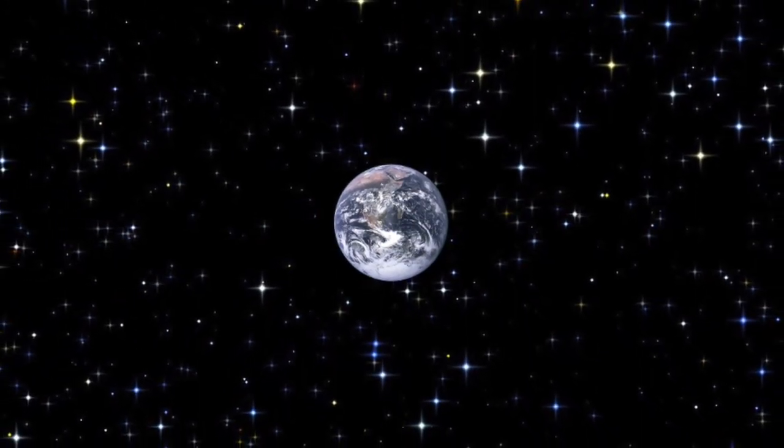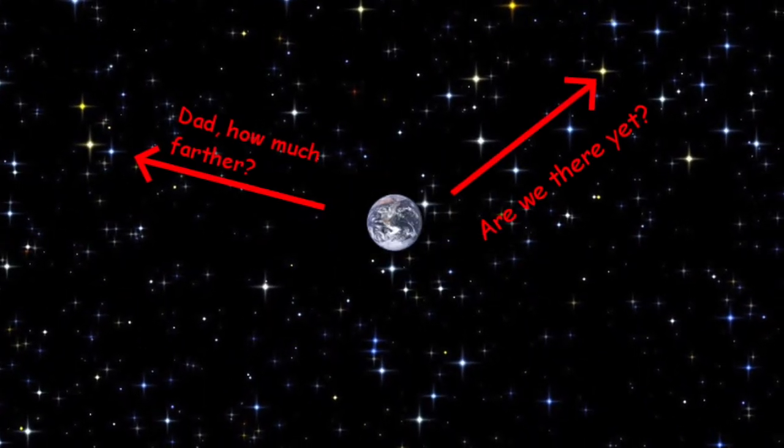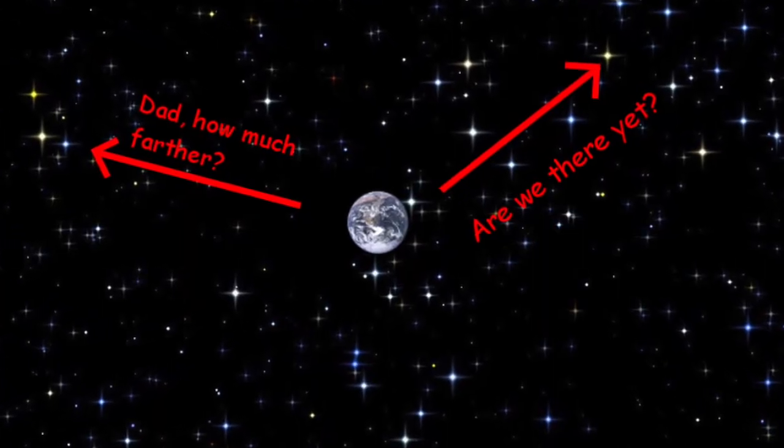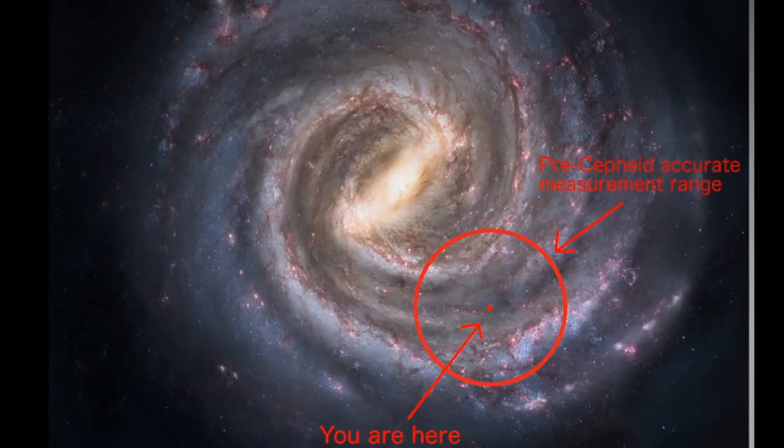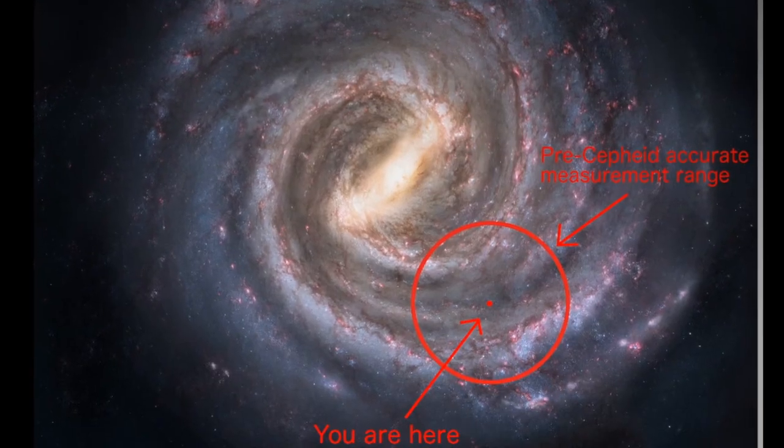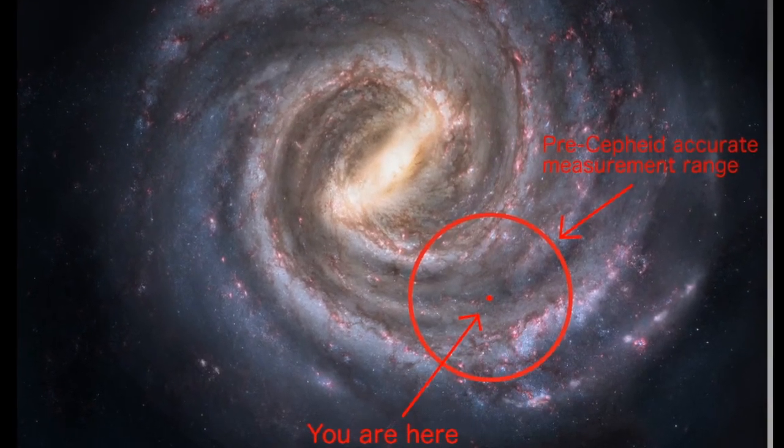A long time ago, some astronomers had a big problem. When they looked up into the night sky, they couldn't tell how far away most of the stars were. As a matter of fact, before 1912, we could only accurately measure distance within a few hundred light years.